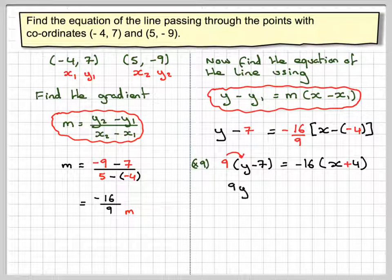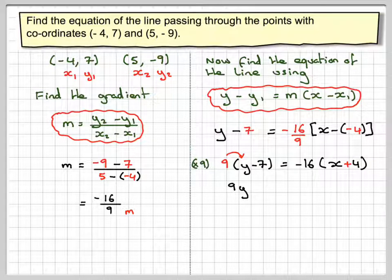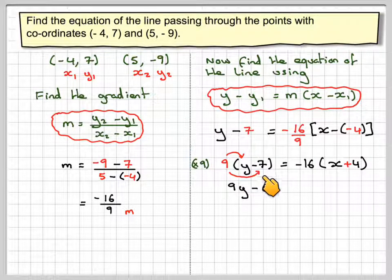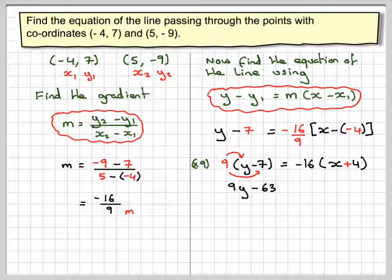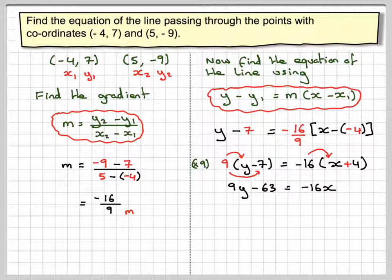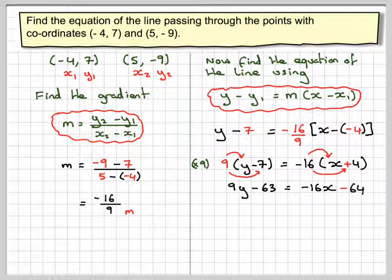Expanding the brackets we get 9y, minus 9 times -7 which is minus 63. -16x, and then again the sign is going to change again. So we get -16 times plus 4 which is -64.